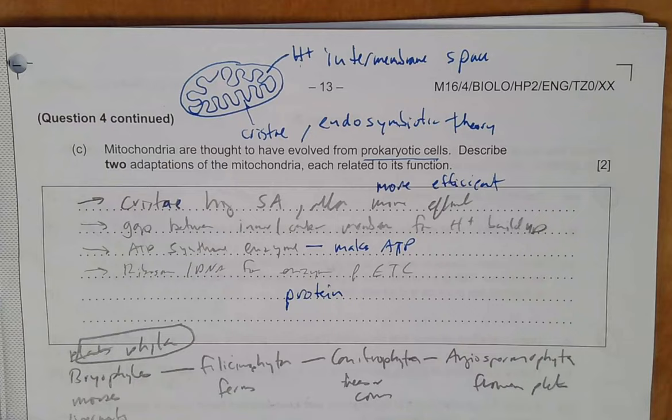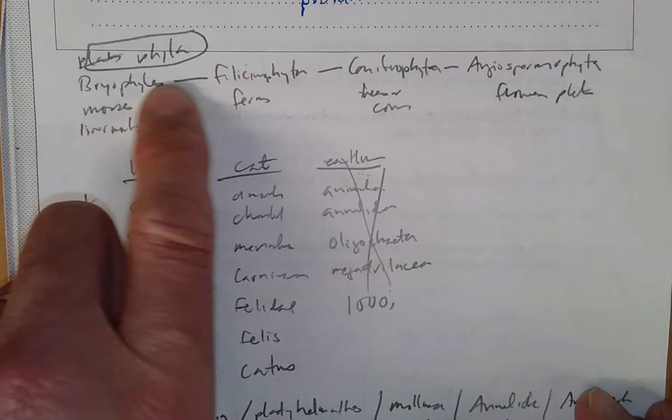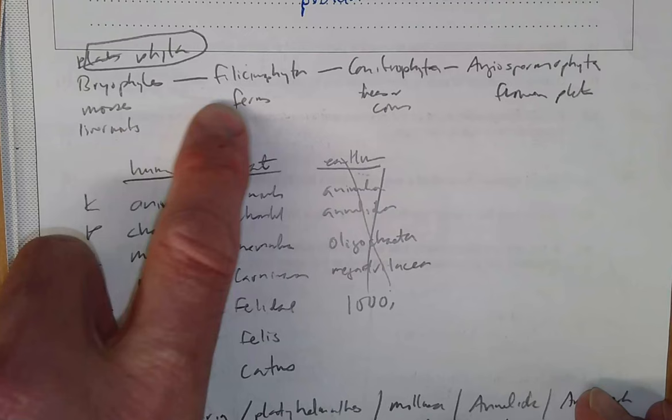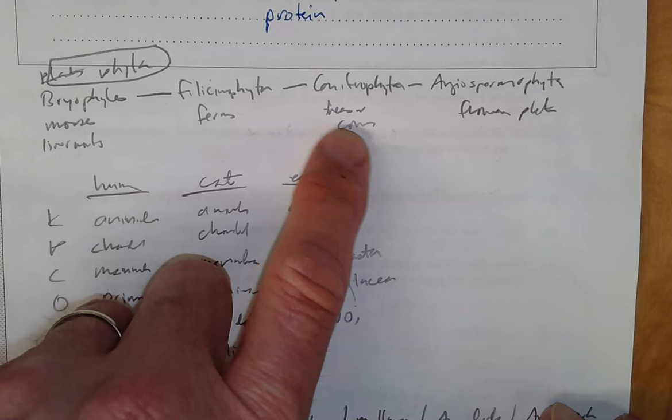And I guess the last thing I did have—might as well just review our different phyla that you need to know about. For plants you got the bryophytes, which are mosses and liverworts. Filicinophyta, which are ferns. Coniferophyta, which are pine trees—anything with a cone on it. And then angiospermophyta, and that's flowering plants.